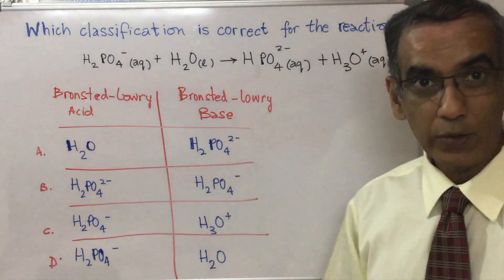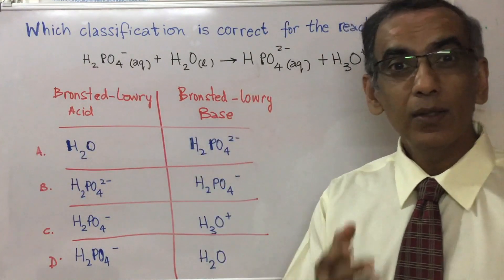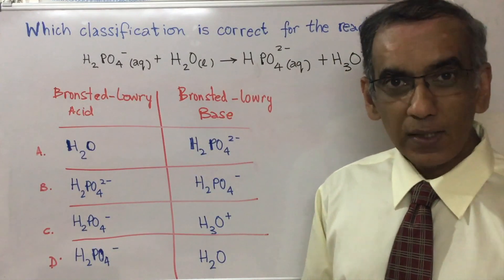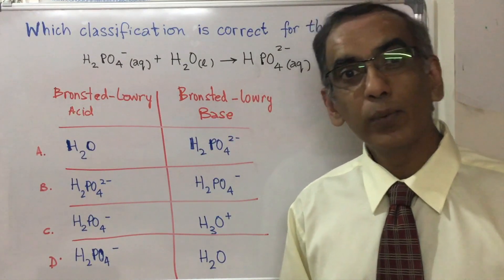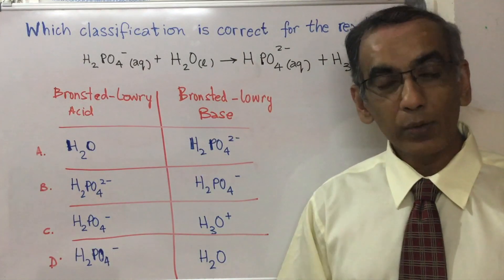Now this particular question deals with Bronsted-Lowry acids and bases, Topic 8 for IB chemistry. And it's important to know that a Bronsted-Lowry acid is a proton donor and a Bronsted-Lowry base is a proton acceptor.